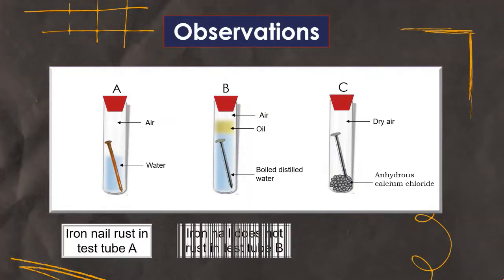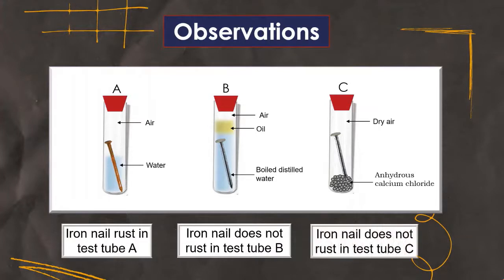Iron nail does not rust in test tube B. The nail is exposed to only water but not with air. Here, oil prevents air dissolving in the water. And iron nail does not rust in test tube C also.